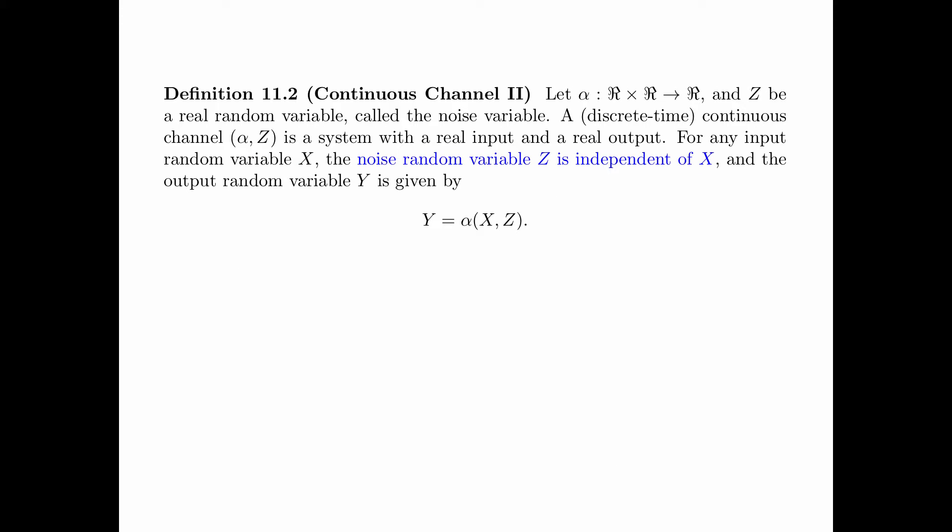Now we give the second definition of the continuous channel. Let alpha be a function that maps R × R to R — that is, it takes two real values and maps to one real value. And let z be a real random variable called the noise variable. A discrete time continuous channel specified by the pair (alpha, z) is a system with a real input and a real output. For any input random variable x, the noise random variable z is independent of x, and output random variable y is given by y = alpha(x, z). This is illustrated in the figure.